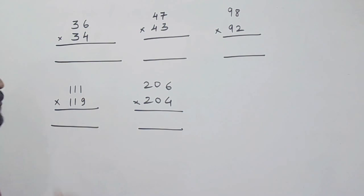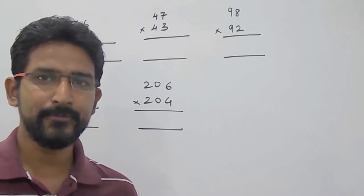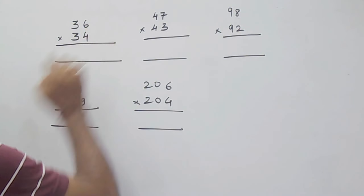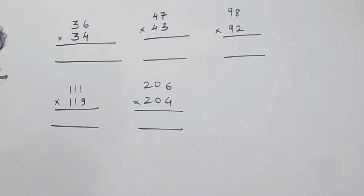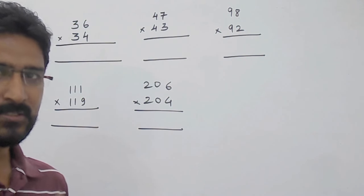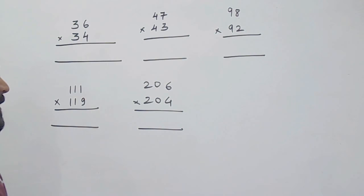For example, you want to multiply 36 into 34. If you see that the unit place, i.e. 6 and 4, add up to 10 and the 10s place are same, i.e. 3 and 3. This trick is only applicable for such type of numbers.